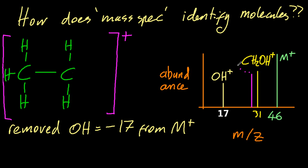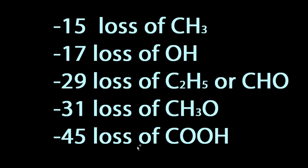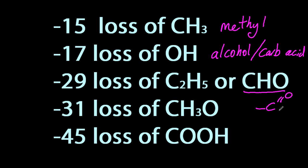So if we show you the spectrum, hopefully you can work out what it is you started with. So which numbers are you supposed to know? Because there seems to be a lot of weird things going on here. These are the ones you're supposed to know. If you lose 15, it's methyl. If you lose 17, it's OH. So that could be alcohol, it could be a carboxylic acid. Minus 29 is ethyl, or an aldehyde. So they might like to play with that. Minus 31 is that strange beast, and minus 45 is a carboxylic acid group. Those are the ones you're expected to be able to recognize.